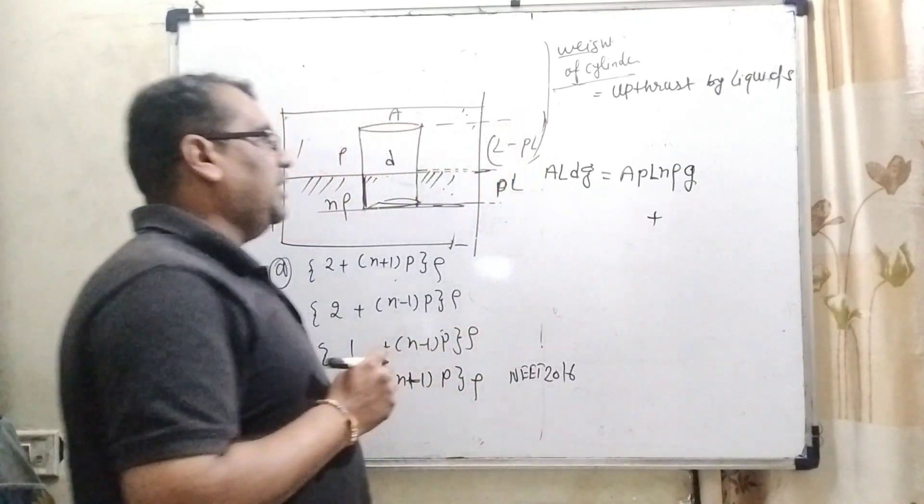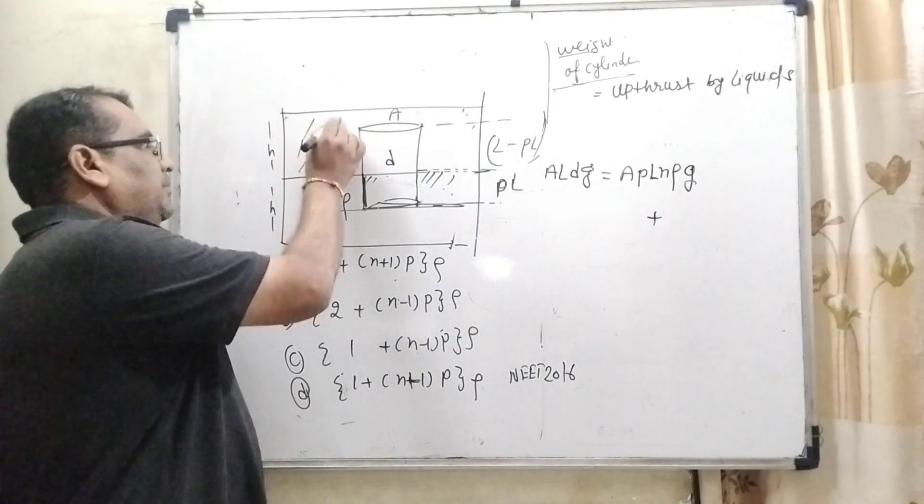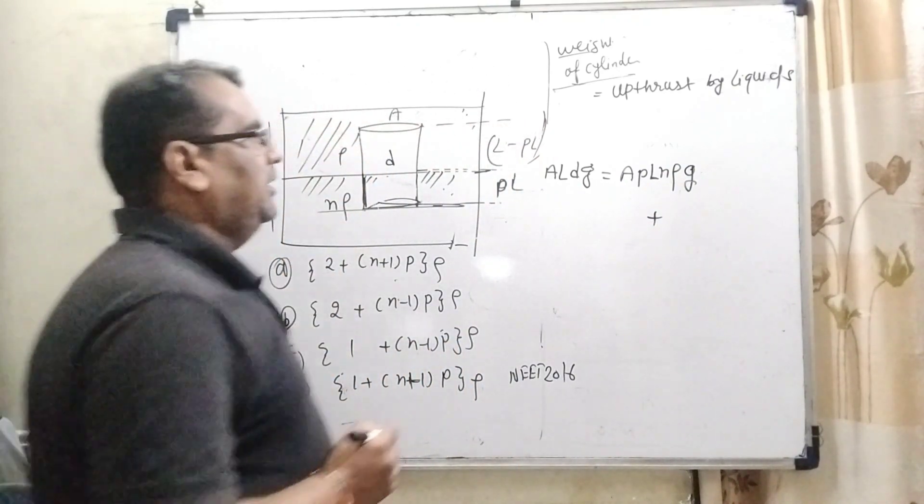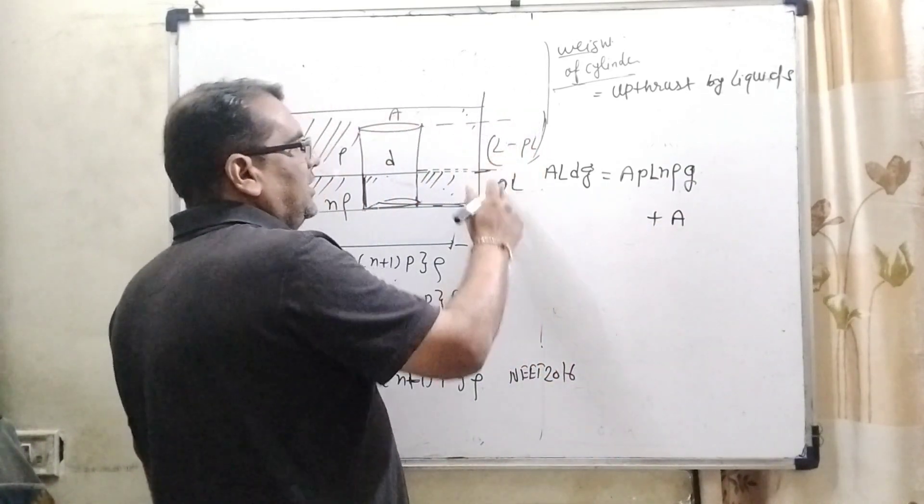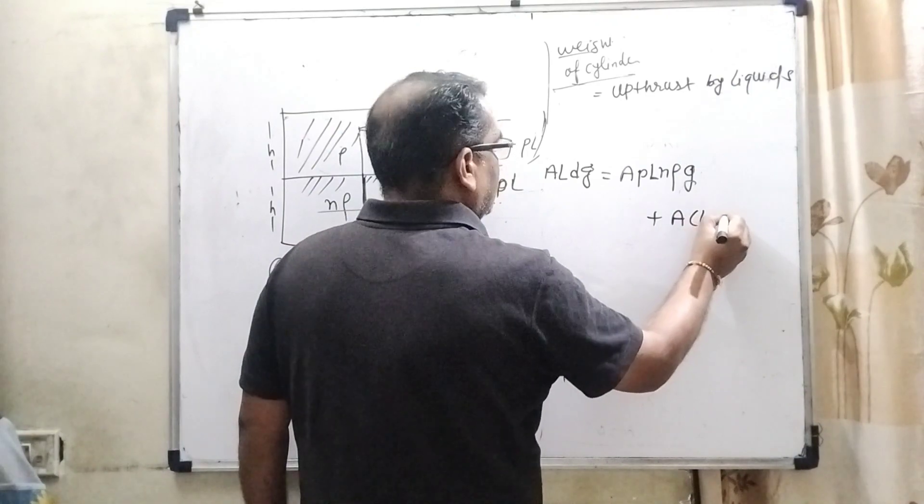And for the same thing, upthrust acting by the upper liquid: area of cross-section is the same, length is L minus pL.